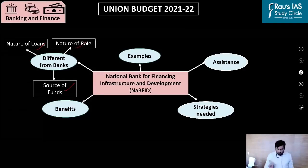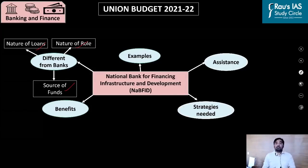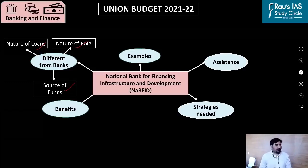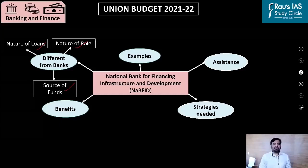The third difference is the nature of role. A scheduled bank's role is limited to giving loans, but the role of development banks is much more multifaceted. The development bank provides necessary hand-holding support to ensure the success of infrastructure projects — for example, identifying which projects need funding, examining financial viability, and providing managerial assistance such as preparation of detailed project reports.